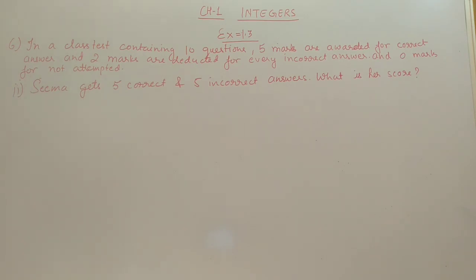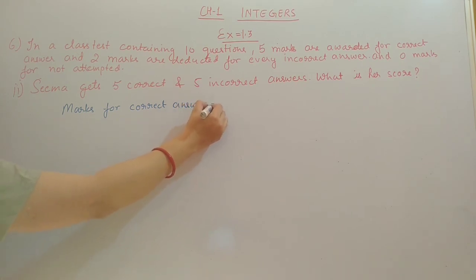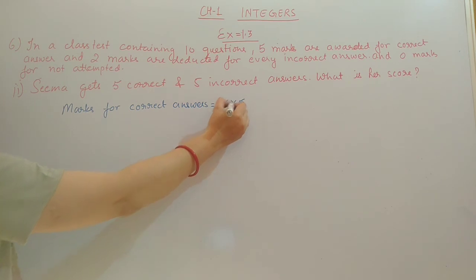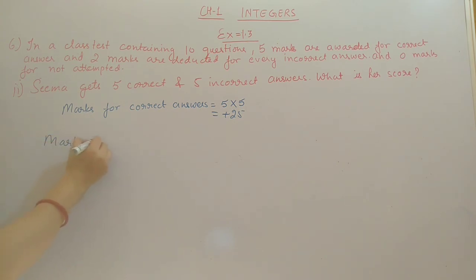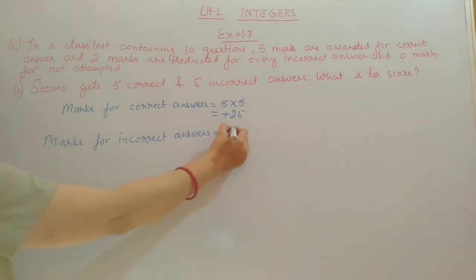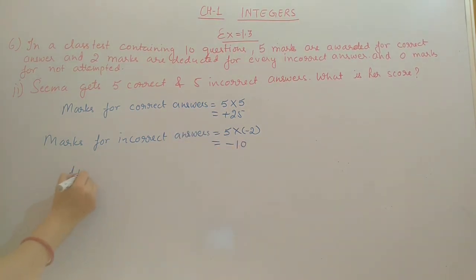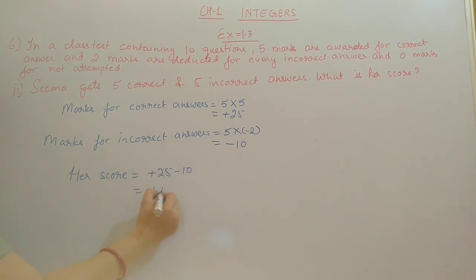Second part: Sima gets 5 correct and 5 incorrect answers. Marks for 5 correct answers: 5 into 5 equals plus 25. Marks for incorrect answers: 5 into minus 2 equals minus 10. So her score is plus 25 minus 10 equals plus 15 marks.